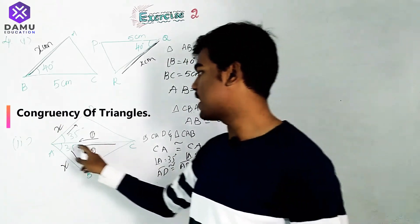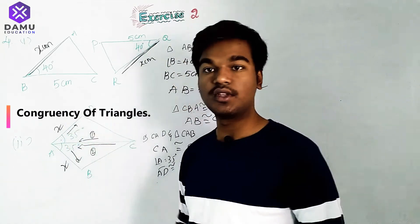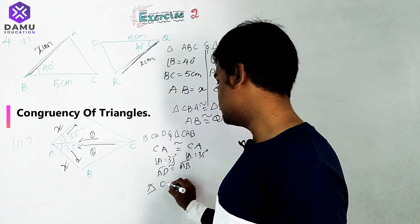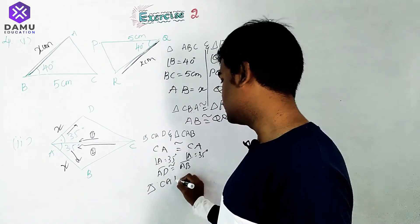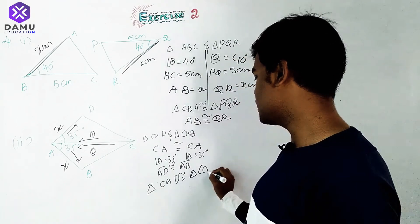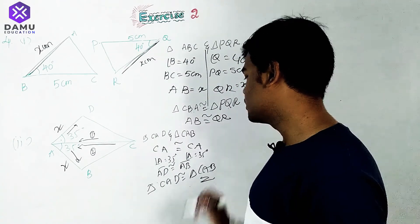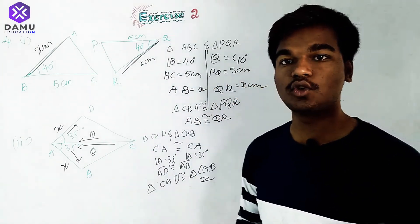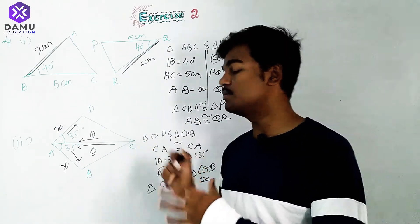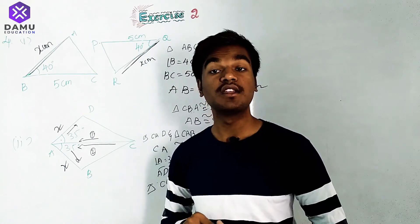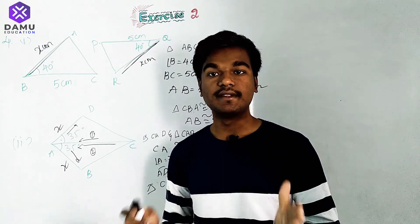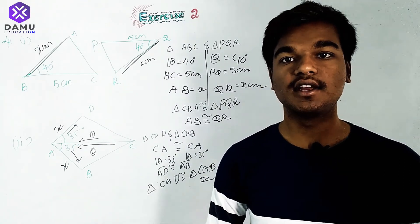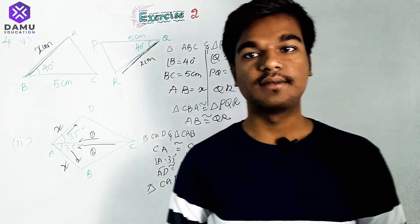This gives us side-angle-side. So triangle CAD is congruent to triangle CAB. Both triangles are congruent to each other, satisfied by the given angles and sides using the SAS congruency criteria. Thanks for watching this video. If you have any doubts, please use the comment section and please subscribe.